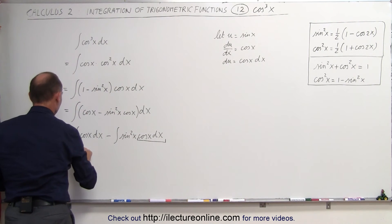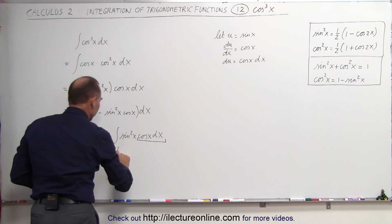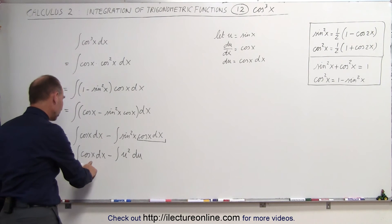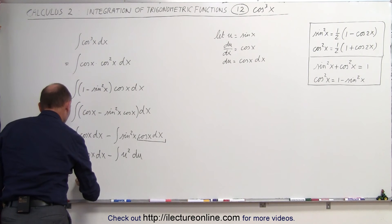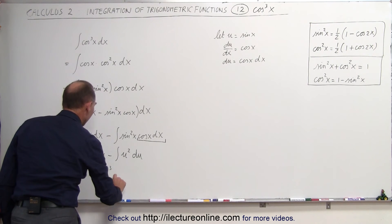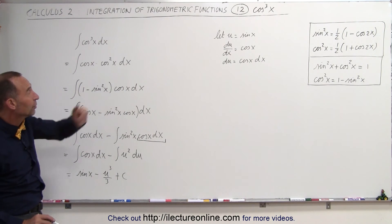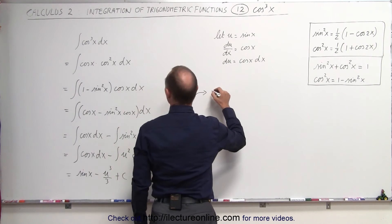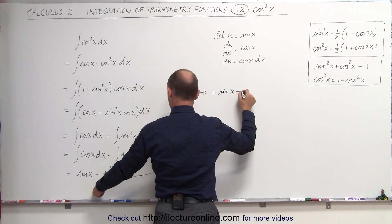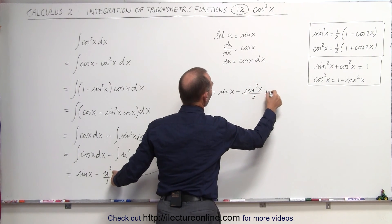The following integrals become: the integral of cosine of x dx, minus the integral of u squared times du — and this I know how to integrate. The first one is also easy. The integral of the cosine equals the sine of x, minus u cubed over 3, and of course I can't forget the constant of integration. Now I have to plug back in what u equals. u equals the sine of x, so this becomes: the integral of the cosine cube of x equals the sine of x, minus the sine cube of x divided by 3, plus a constant of integration.